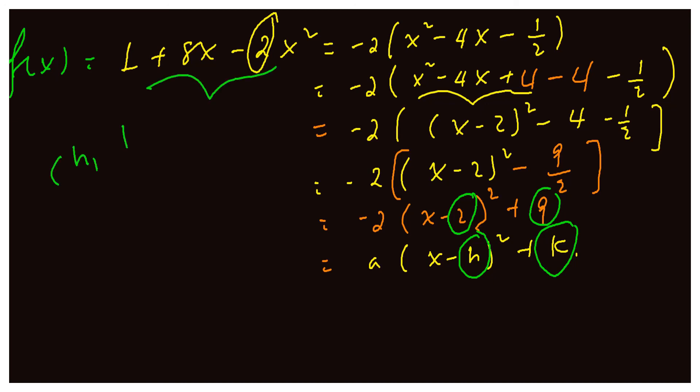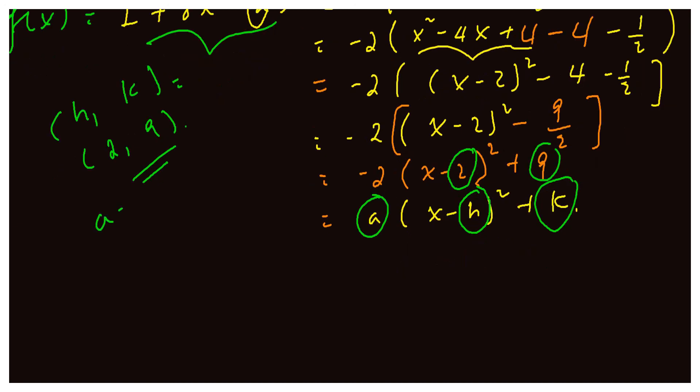So the turning point for our quadratic equation is (2, 9). a is, in this case, negative 2. That means the graph of this function will be downward parabola.